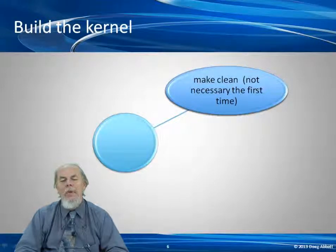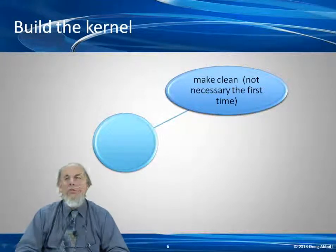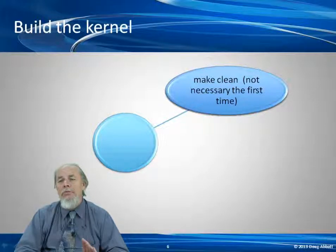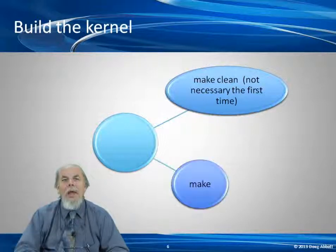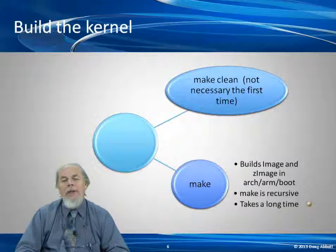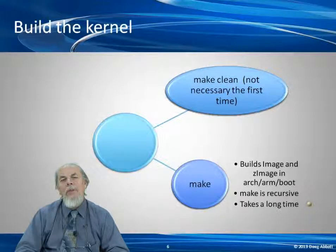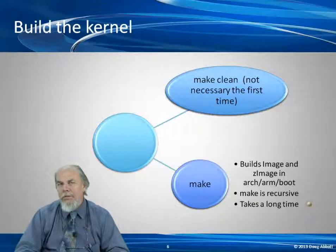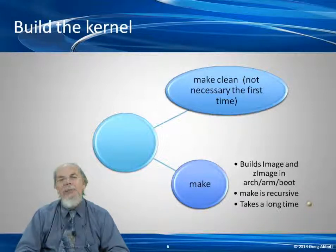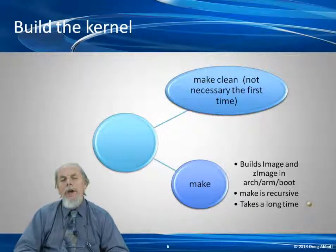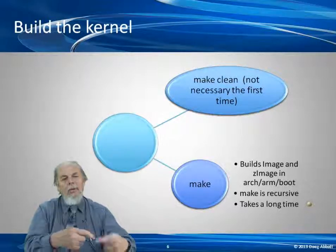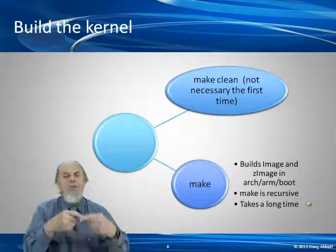We're ready to build the kernel. Strictly speaking, you should always do make clean first so that you force the entire kernel to be rebuilt. The first time around it really doesn't matter because there's nothing to clean, and then just do make. That's going to build image and zimage files in arch/arm/boot. The make is recursive — virtually every directory in the source tree has its own makefile responsible for making the files in that directory, so the top-level makefile works its way down the first branch, comes back up, starts down the second branch, etc.